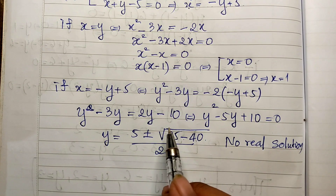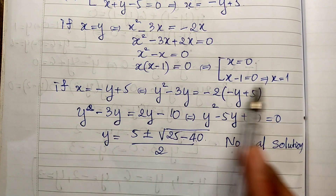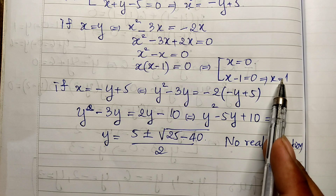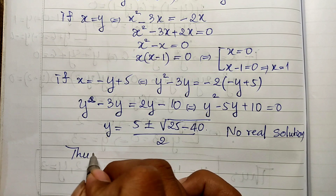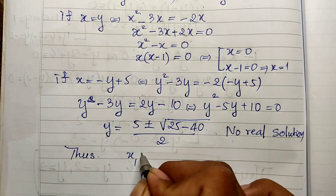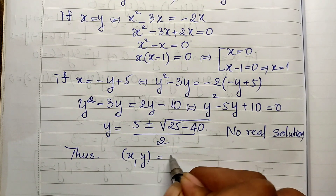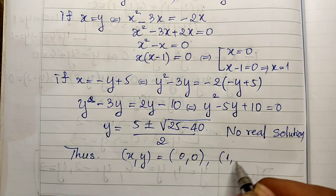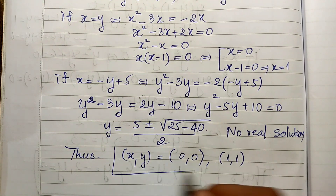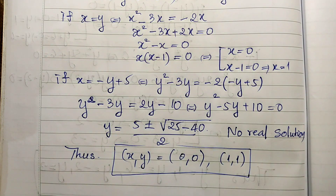Since Case 2 gives no real solution, we only use the results from Case 1: x equals 0 and x equals 1. So the solutions are (x, y) equals (0, 0) and (1, 1). Thanks for watching! If you like my videos, please don't forget to subscribe to my channel for more exciting videos. Goodbye!